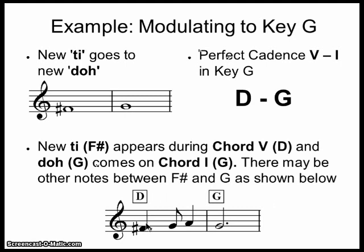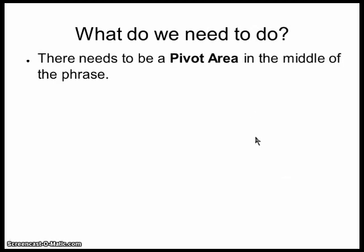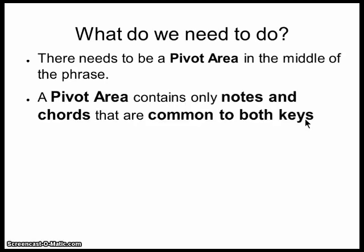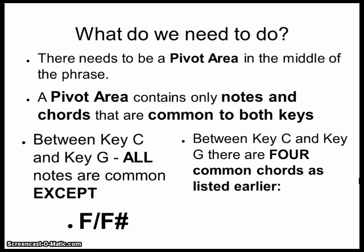We have the chord of D with F sharp, then G and A as a passing note and an extra harmony note, followed by the chord of G with G in the melody. Before this cadence in the dominant key, we must have a pivot area in the middle of the phrase. A pivot area contains only notes and chords that are common to both keys. Between the key of C and the key of G, all of the notes are common except the F, which changes to F sharp. There are four common chords: C major, E minor, G major, and A minor.